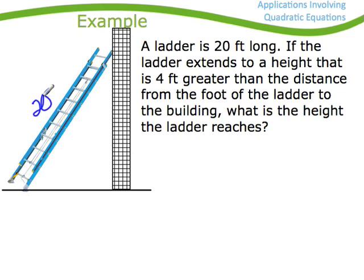Let's try another one. The ladder, 20 feet long. If the ladder extends to a height that is 4 feet greater than the distance from the foot of the ladder to the building, so maybe this is d, and the height then is whatever this distance is plus 4, d plus 4. Then the question says, what is the height that the ladder reaches? Well, if I look here, I have a right triangle. If I have a right triangle, this formula is in play, c squared, where c is always the side opposite the right angle.